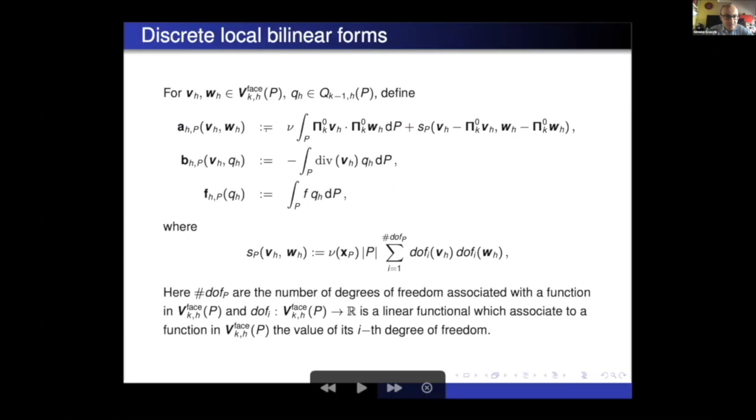So the discrete local bilinear forms are then defined in this way. So discrete A bilinear form is done using the projection, the two projections here in the first term, plus the stabilization. For the stabilization, we use the Dohrmann-Widlund stabilization. Then the local bilinear form for B is actually not approximate, because thanks to the choice of degrees of freedom, we can compute exactly the divergence of the virtual function. And then we will load them. OK, so these are our local bilinear forms.